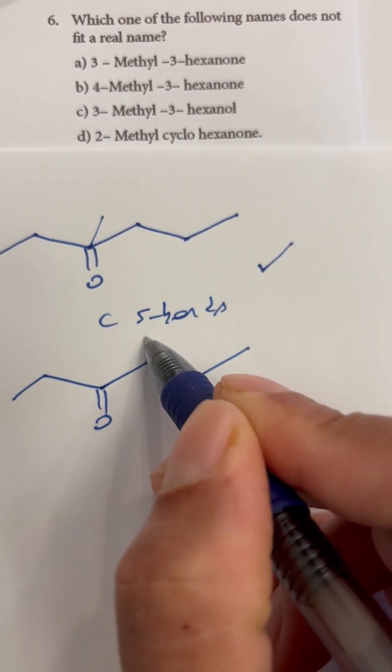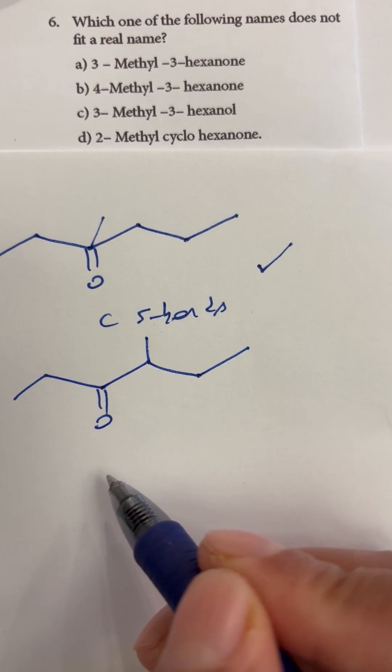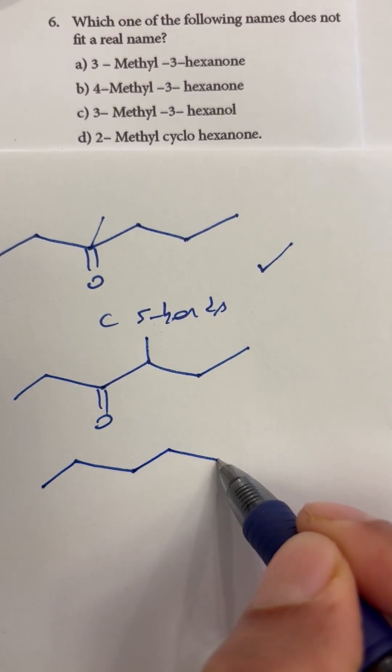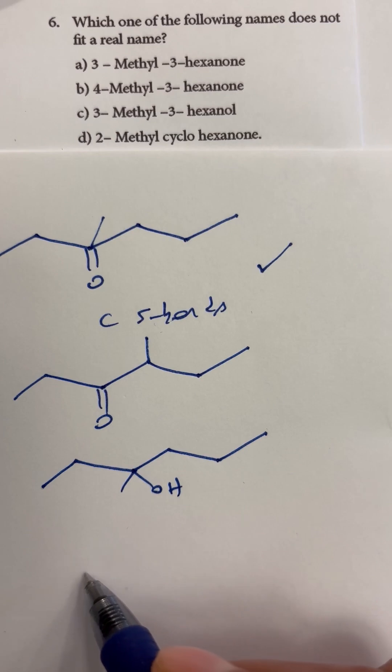That is B. And then C is 3-methyl-3-hexanol, and then 2-methyl-cyclohexanone, that is also possible to draw.